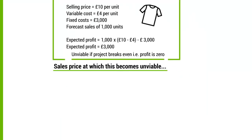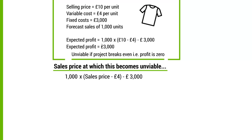Let's start by looking at the change in the sales price. We want to know how much the sales price could fall by before the project becomes unviable — in other words, unprofitable. The selling price is currently £10 per unit. We need to work backwards through the expected profit calculation and find the sales price when profit equals zero. So: 1,000 × (sales price - £4) - £3,000 = 0.